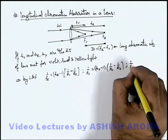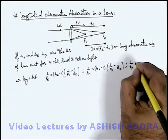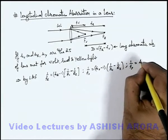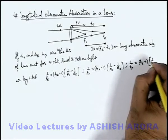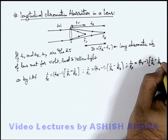And simultaneously we can write focal length for yellow light, that is for mean focal length, this is mu_y minus 1 multiplied by 1/r_1 minus 1/r_2.